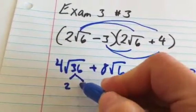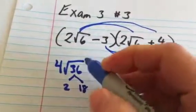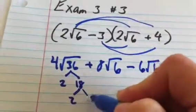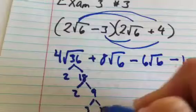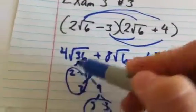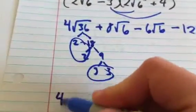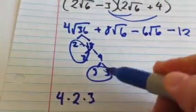That's a 2 and an 18, a 2 and a 9, a 3 and a 3. So a 3 and a 2 will come out. So I'll have 4 times 2 times 3.